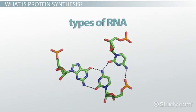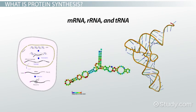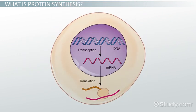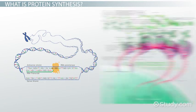There are three types of RNA that aid in protein synthesis: mRNA, rRNA, and tRNA. Let's look at how each contributes to the two steps of the process—transcription and translation.